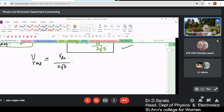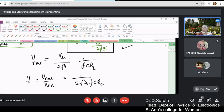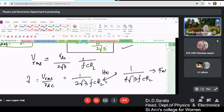So, it will be V_DC/2√3 fC R_L - and hence your ripple factor is given by V_RMS/V_DC. When you simplify it is 2√3 fC R_L for a half wave rectifier and that equals 1/4√3 fC R_L for a full wave rectifier. This is for half wave, this is for full wave.